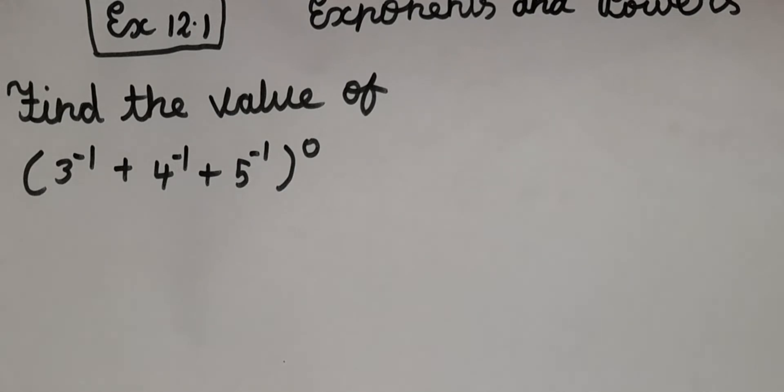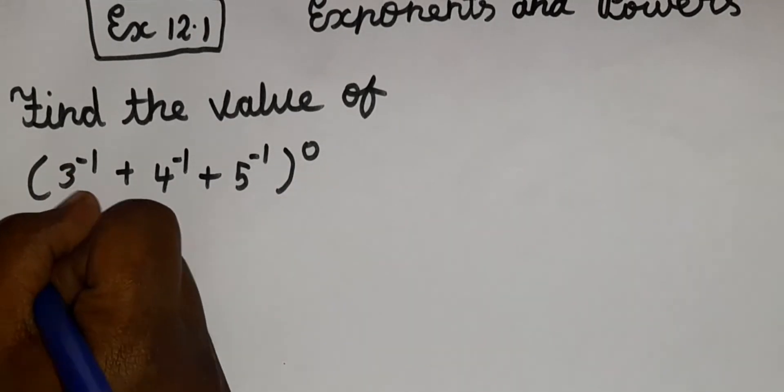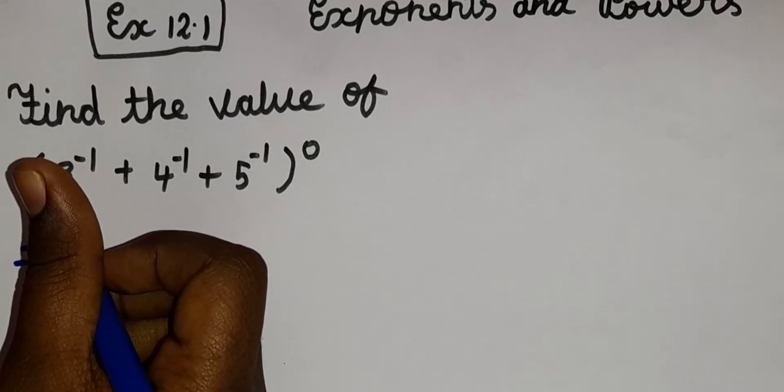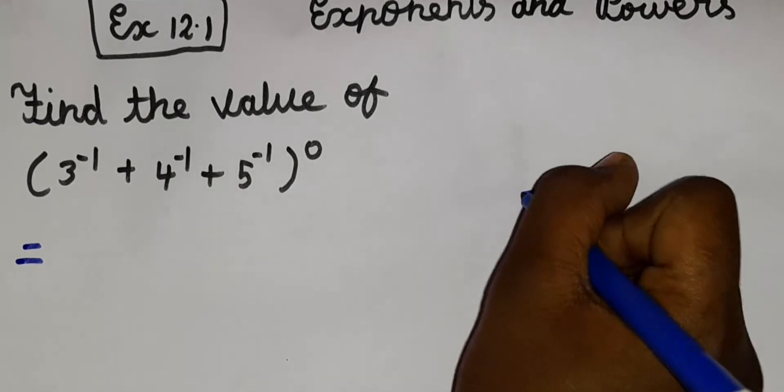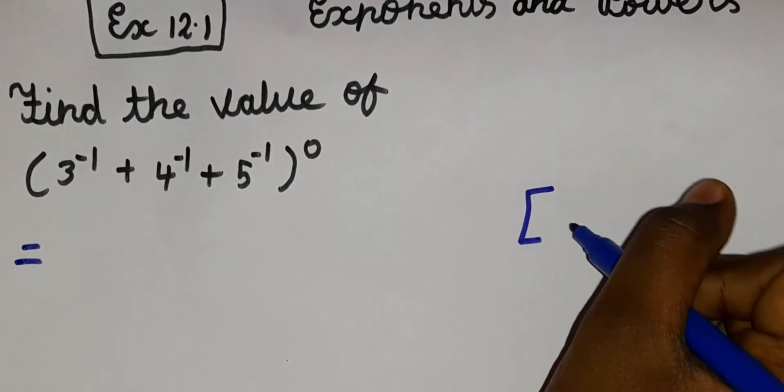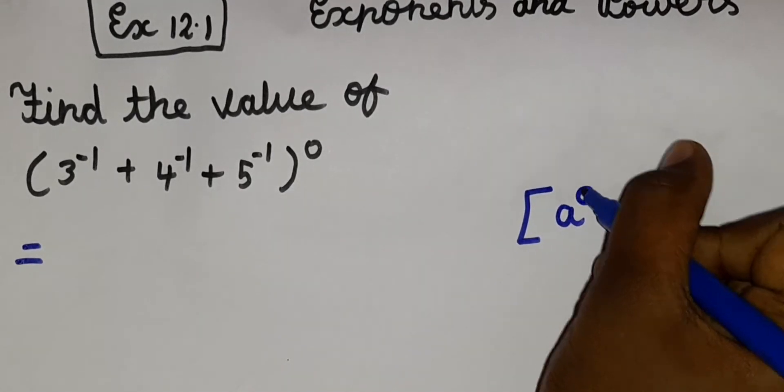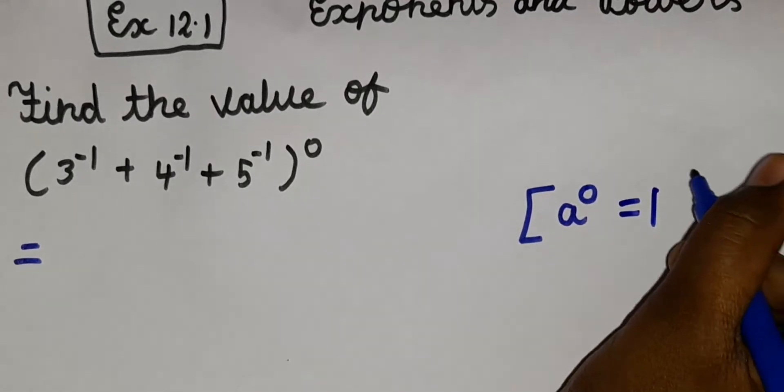So guys, this sum is really easy because according to laws of exponent, there is a rule that when we have a power, let me write it here. a power 0, the answer is 1.